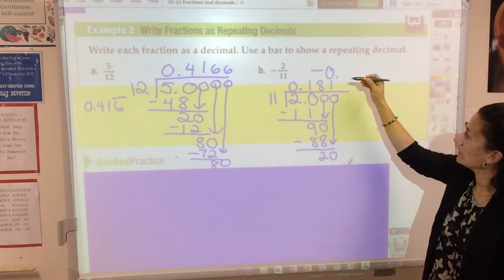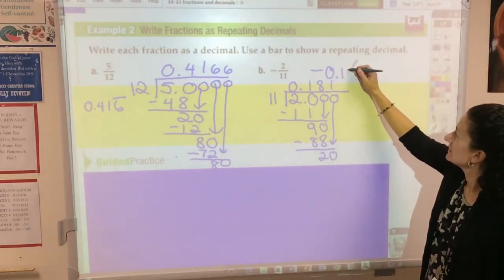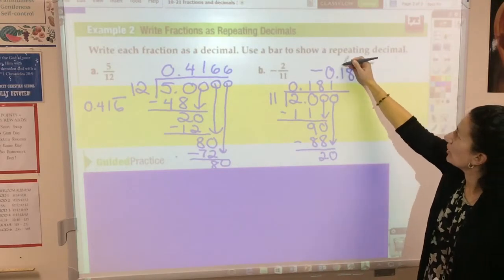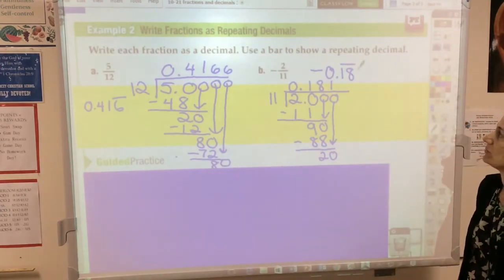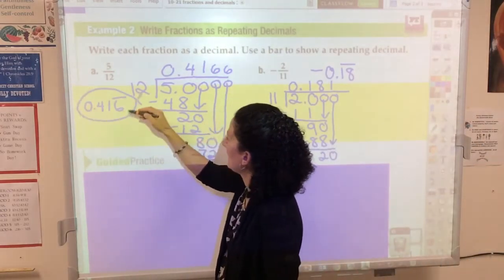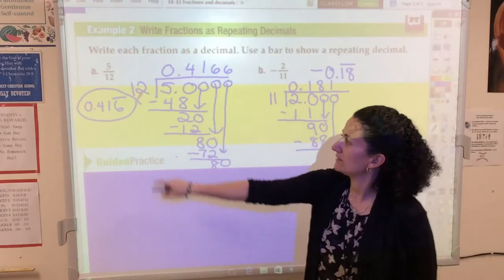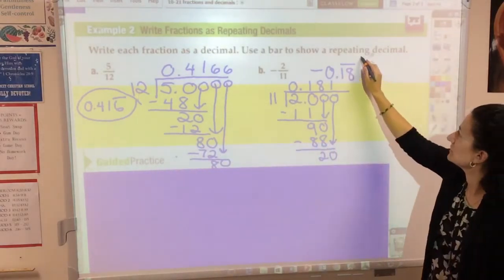So it's going to be 0 point 18, 18, 18. So in this situation, I'm going to put the bar over the 1 and the 8, because both of those digits repeat. Notice this one, I only put the bar over the 6 because my 4 and my 1 didn't repeat, only the 6. So I only put the bar over the numbers that repeat.